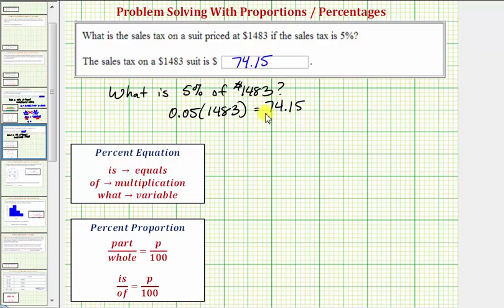Let's also show how to find this using the percent equation and percent proportion. To help us set up the percent equation we use these keywords here. So notice how the first word in our question is what, which represents the unknown or the variable. Whenever we see the word what or the words what number, we write down our variable. Let's use t for tax.